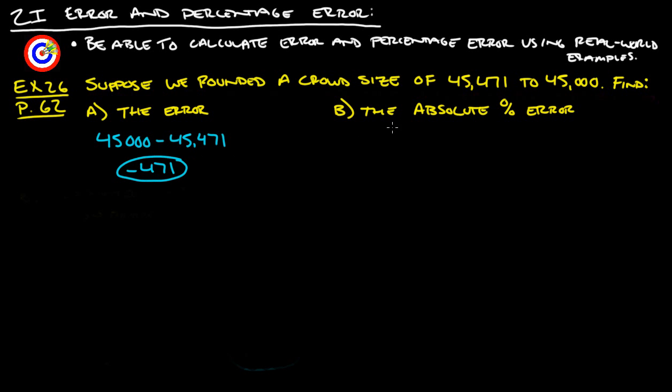For Part B, the absolute percent error is going to be, from our formula, we take the absolute value of the error, which is negative 471, divide it by the actual crowd size, which is 45,471, and then multiply that answer by 100.